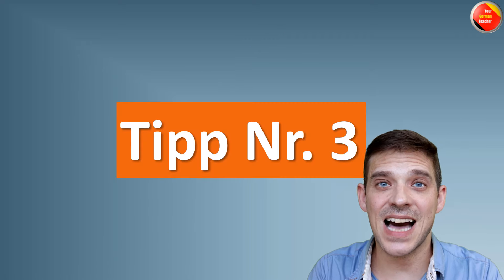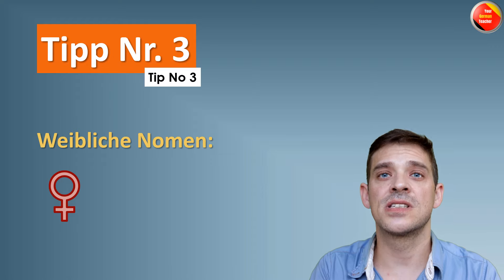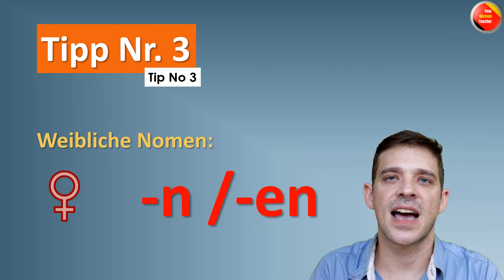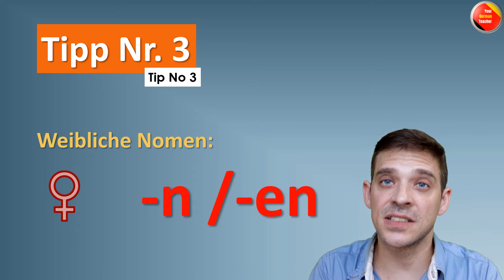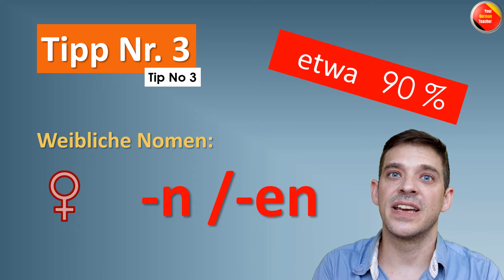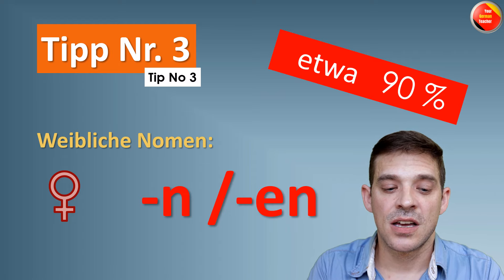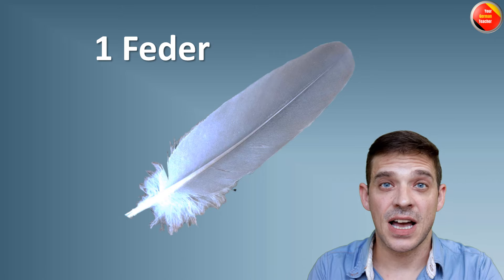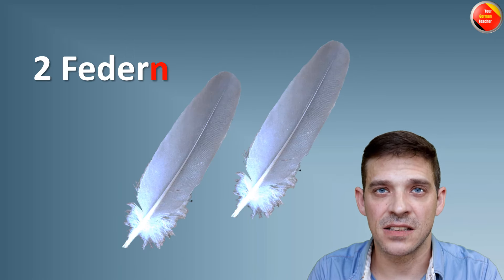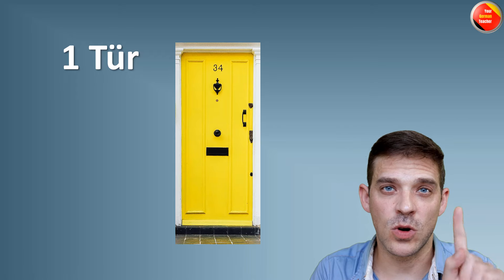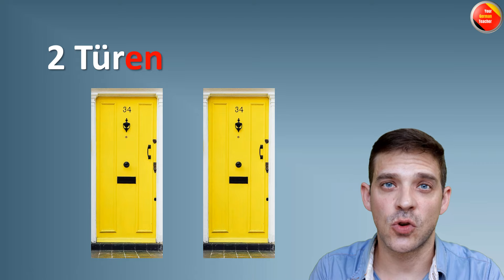Tipp number drei — weibliche Nomen, all feminine nouns. What do you do? Add N or EN, and you're going to be fine in around 90% as well. Zum Beispiel: eine Feder → zwei Federn. Oder eine Tür, one door → zwei Türen, two doors.